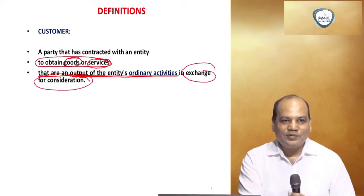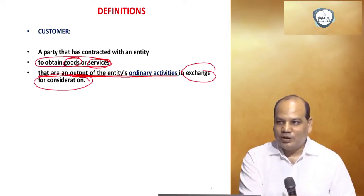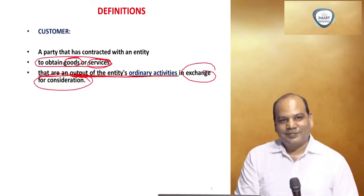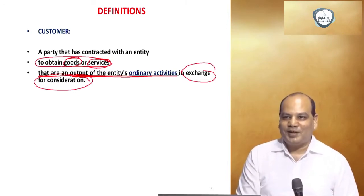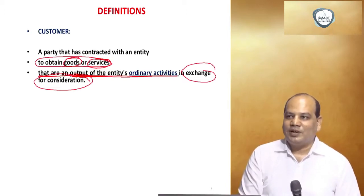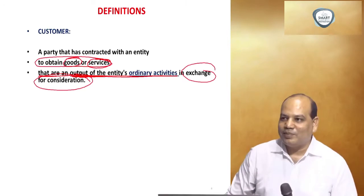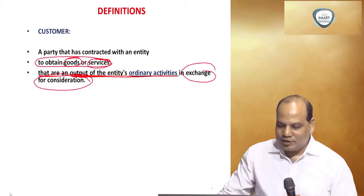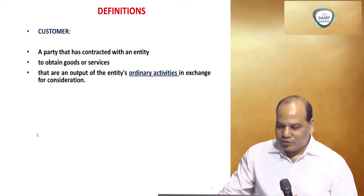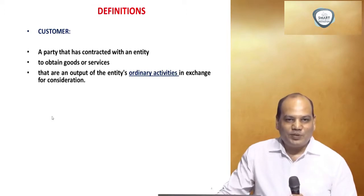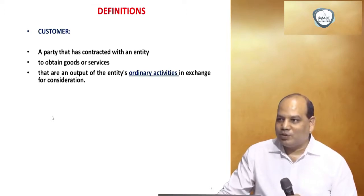Similarly, a policeman comes, takes a product, and goes away without paying. Is the police your customer? No. Treat it as a staff welfare expense or environmental protection expense. That is what companies do — all bribes are charged under heads like staff welfare expense, sales promotion expense, or environmental protection expense.